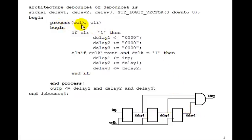Then our process will be C-Clock and clear. So if clear equals 1, we'll set delay1 to 0000. Remember delay1 and delay2, delay3 are all 3 down to 0. That is, we have four versions of this, one for each push button. So delay1 will be 0000, delay2, and delay3.